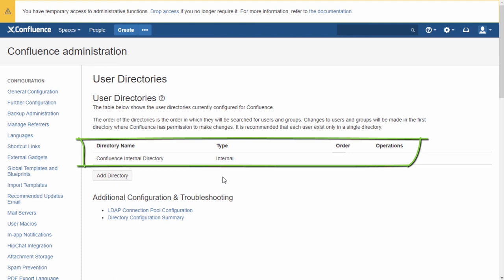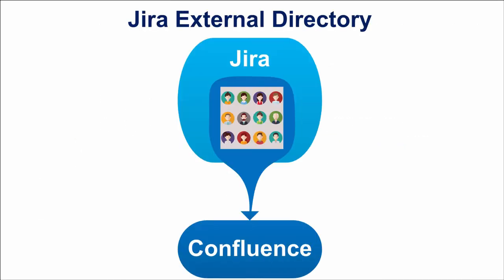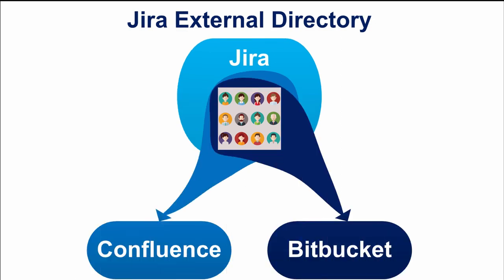But sooner or later you might need to run an external directory. The first variant is to use a Jira external directory. This option is useful if you already use Jira and decide to set up Confluence, or if you want to avoid administering the same users in two different systems. If you have several Atlassian applications, you should consider using Crowd, the user directory from Atlassian.